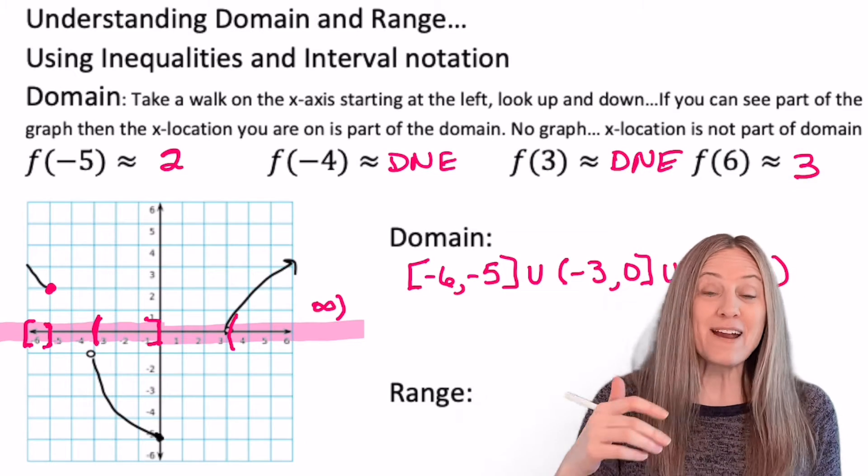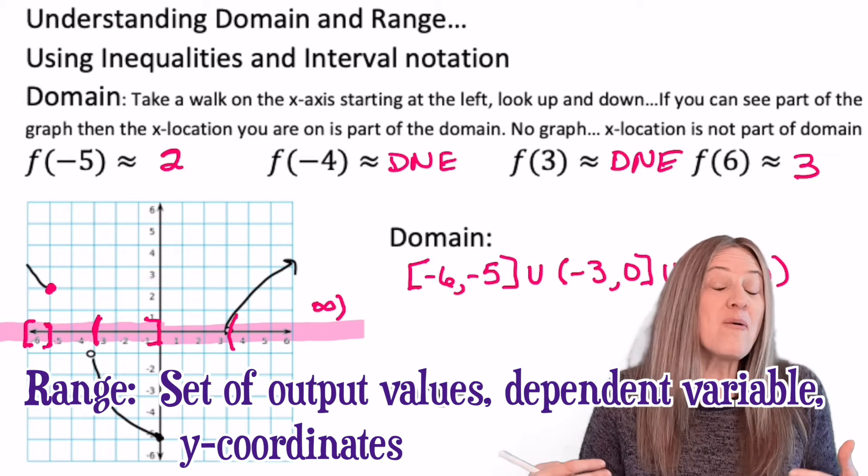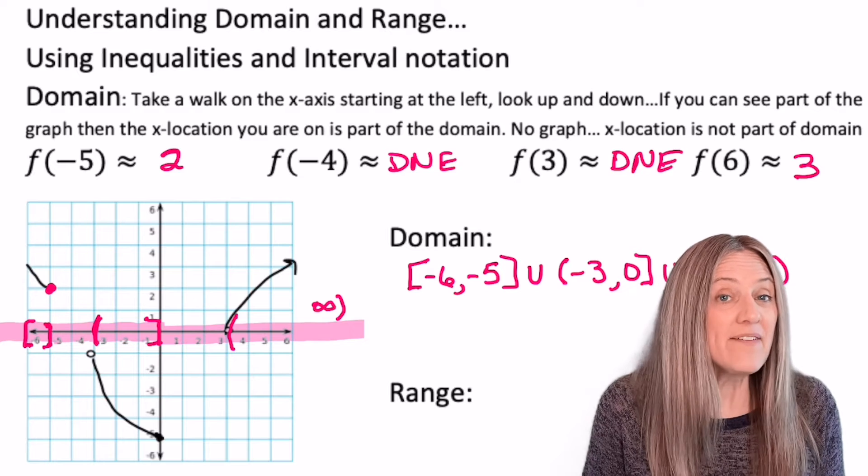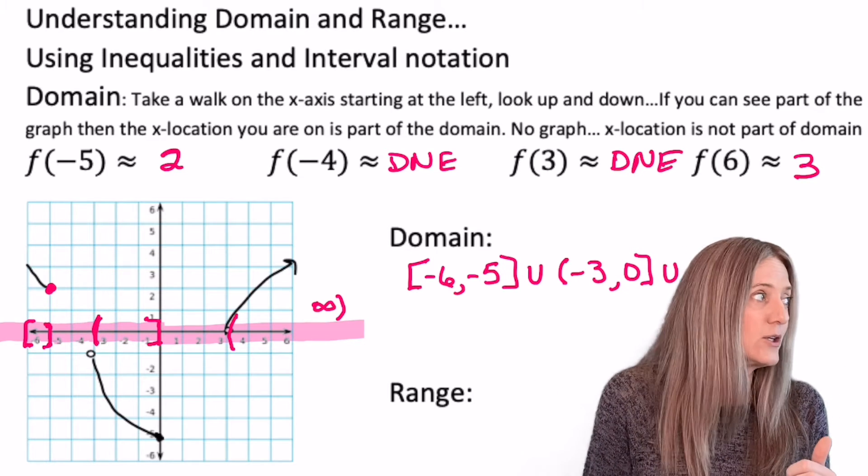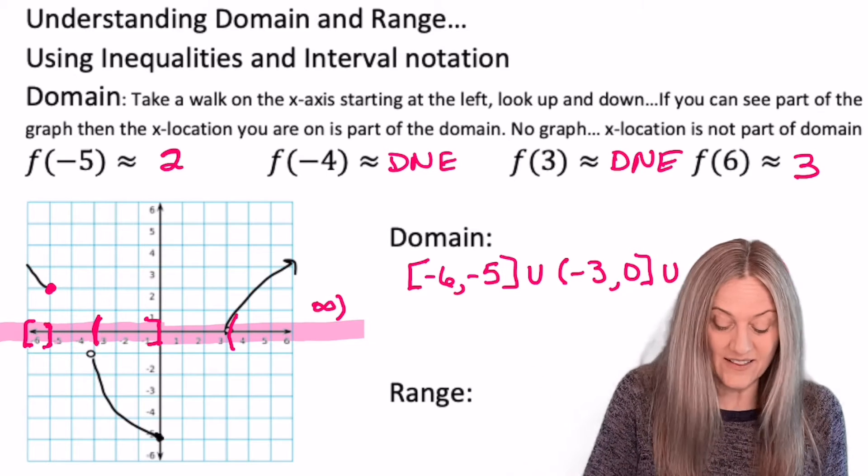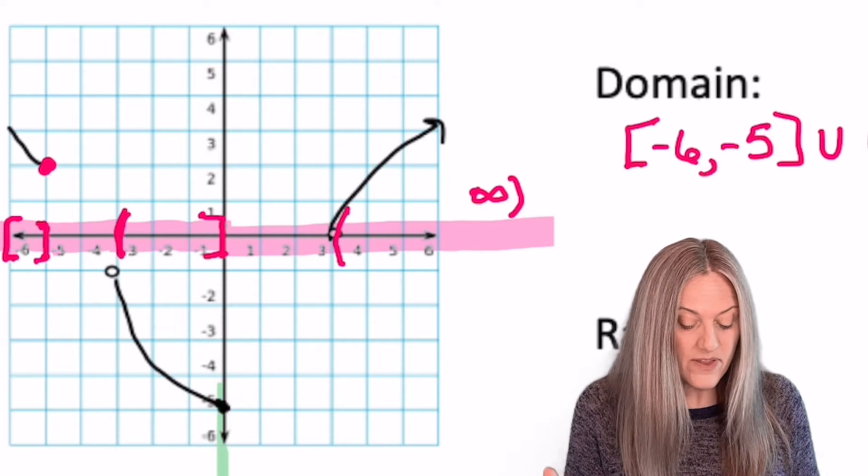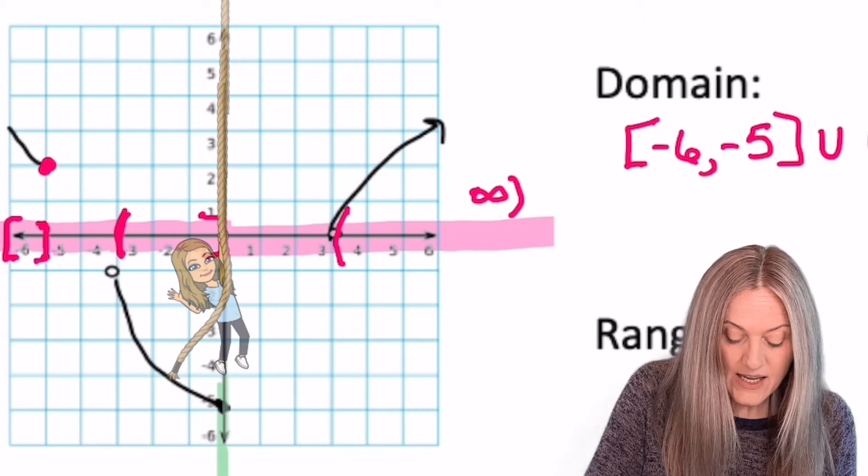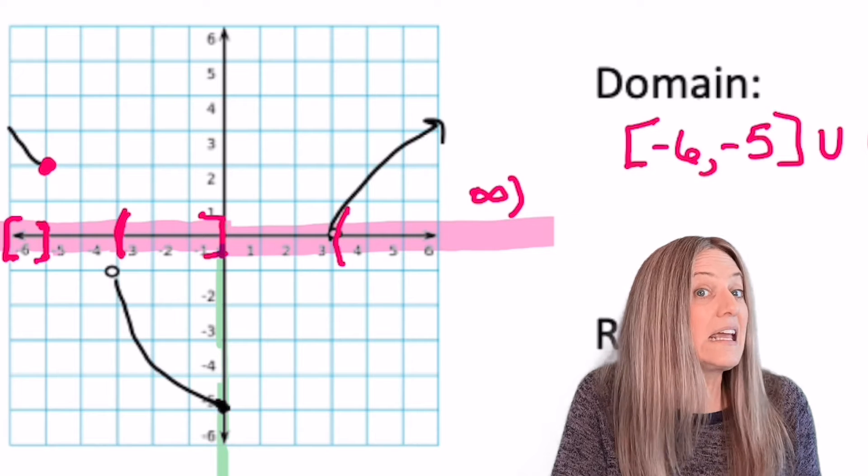Now let's talk about range. Range, of course, is the output values in a function or a relation, the dependent variable, or we can think of it as the y-coordinates. So when we find range graphically, we take a walk on the y-axis, starting way down at negative infinity. Take a look left, take a look right. If you see part of the graph, that is part of the range. Let's go. Down here, negative infinity, come up, boom! I hit part of the graph right at negative 5. And if I keep going, it seems to go all the way along to negative 1. So let's go ahead and mark that in interval notation.